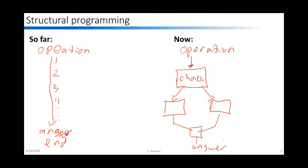In addition to making split choices, sometimes we may want to go back and redo some sort of operation. If we want to look at something that's going to happen many times over, instead of reprogramming the same step 50 times, we can put in a back arrow that tells the computer to redo something over and over again.